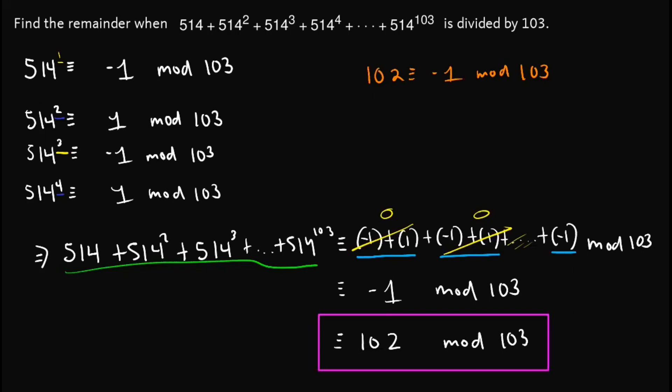And so we have found that the remainder of the given expression when divided by 103 is 102. That is the answer for this problem. The key is to know how modular arithmetic works — the notation: a is congruent to b, modulo n — and know that this is the same as n divides a minus b. Having knowledge of this makes it much easier to solve this problem.